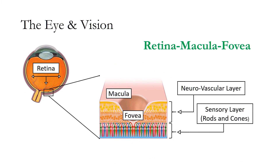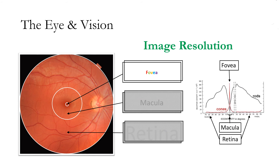This is an enlarged view of the macular and foveal region of the retina. The cross section of the macula and fovea identifies the neurovascular layer and the sensory layer containing the photoreceptors, also known as the rods and cones. The left image on this slide is a normal retina in which the fovea, macula, and retina are identified. The graph on the right shows the rod and cone concentrations at various retinal locations. The fovea, followed by the macula, has the highest resolution. The remaining area of the retina contains only rods and is not capable of the same resolution or clarity.